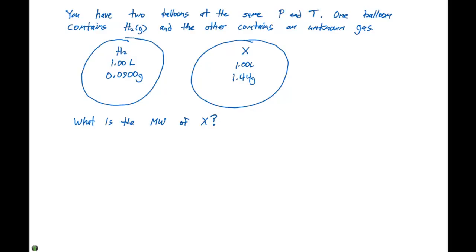Here our balloon on the left has hydrogen. We have 1.00 liters and 0.0900 grams of hydrogen gas. Our balloon on the right is an unknown gas X with 1.00 liter volume and 1.44 grams of the gas. We're now asked to calculate the molecular weight of X.